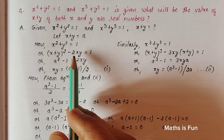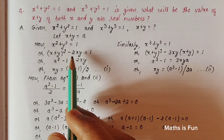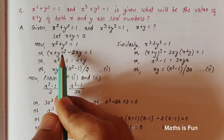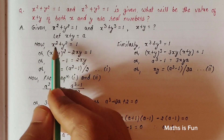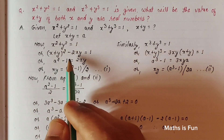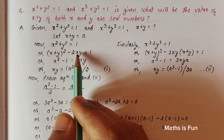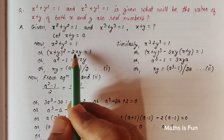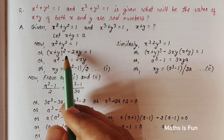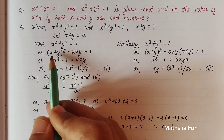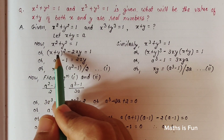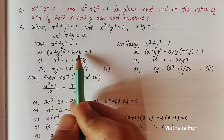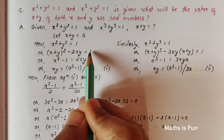Remember the formula: (a + b)² = a² + b² + 2ab. So (x + y)² = x² + y² + 2xy, and the +2xy and -2xy cancel out, leaving x² + y². So this step is valid. Since x + y = a, we write a² - 2xy = 1.